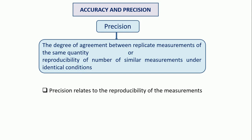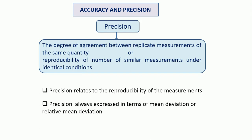Precision relates to the reproducibility of the measurement, and precision is always expressed in terms of mean deviation or relative mean deviation.